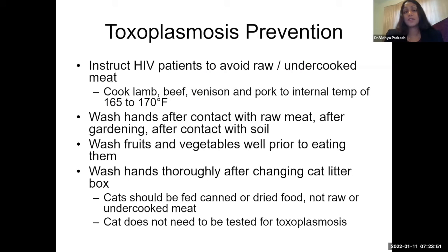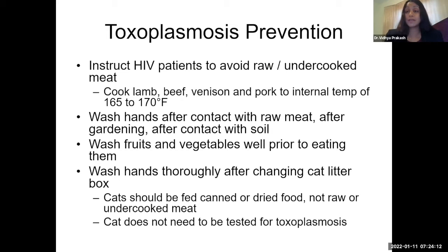Prevention: tell HIV patients to avoid raw and undercooked meat, wash hands after contact with raw meat, after gardening, after contact with soil, and wash fruits and vegetables well. Especially for changing cat litter — also important for pregnant patients — wash hands thoroughly after changing cat litter. Cats should be fed canned or dried food, not raw or undercooked meat. You generally don't need to have the cat tested for toxoplasmosis.